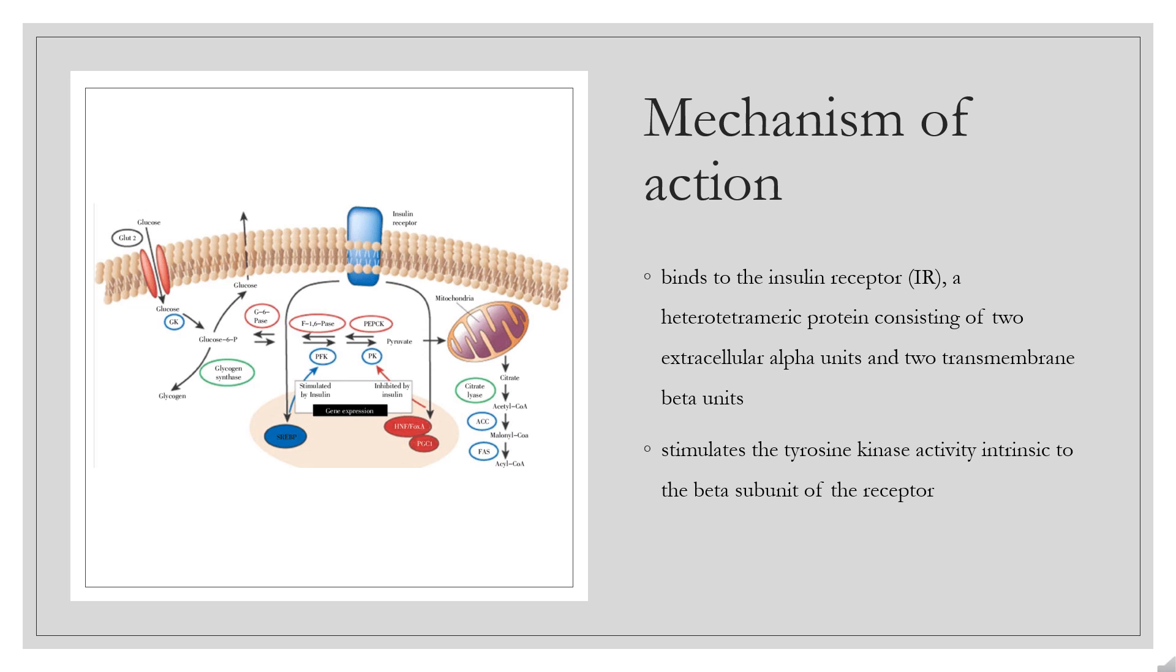The bound receptor autophosphorylates and phosphorylates numerous intracellular substrates such as insulin receptor substrates (IRS) proteins, CBL, APS, SHC, and GAB1. Activation of these proteins leads to the activation of downstream signaling molecules including PI3-kinase and AKT.